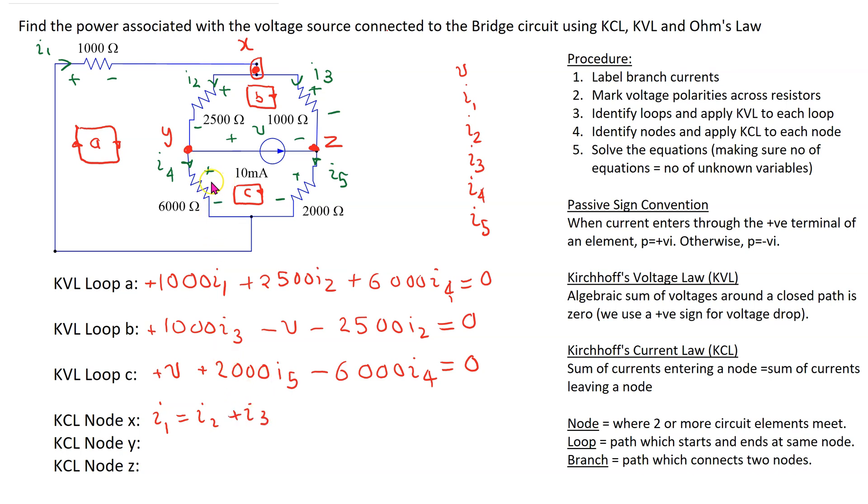At node Y we have I2 is entering, I4 and 10 milliamp current are leaving. So what we get is I2 equals I4 plus 0.01 amps, and at node Z, I5 is leaving and we have two currents entering. So this gives I5 equals I3 plus 0.01.